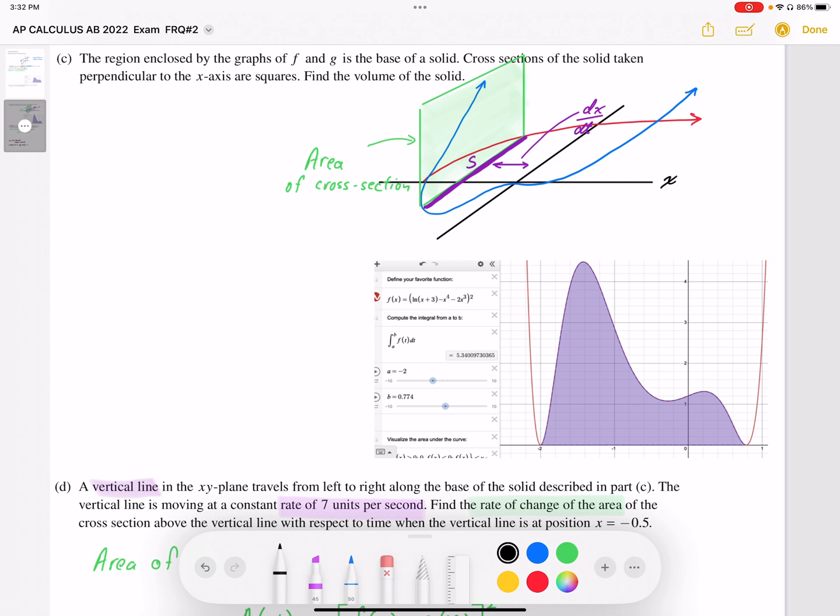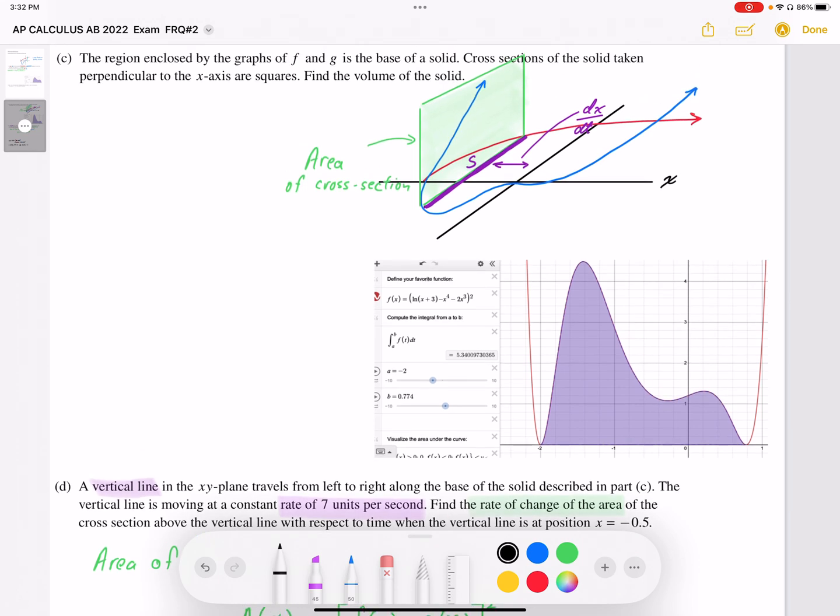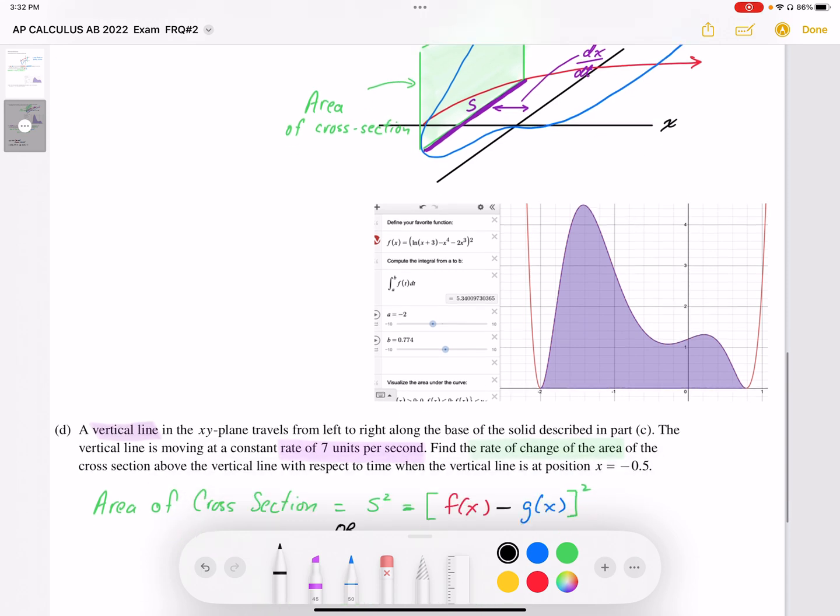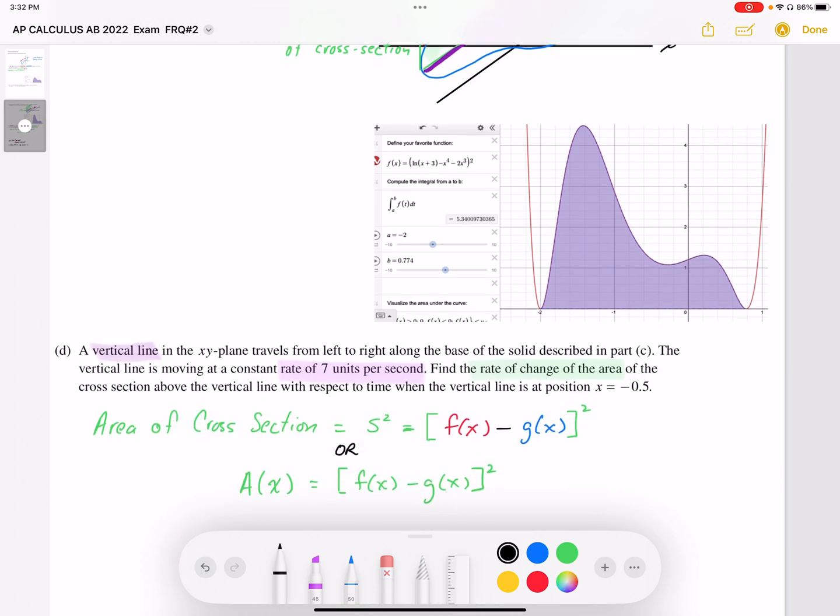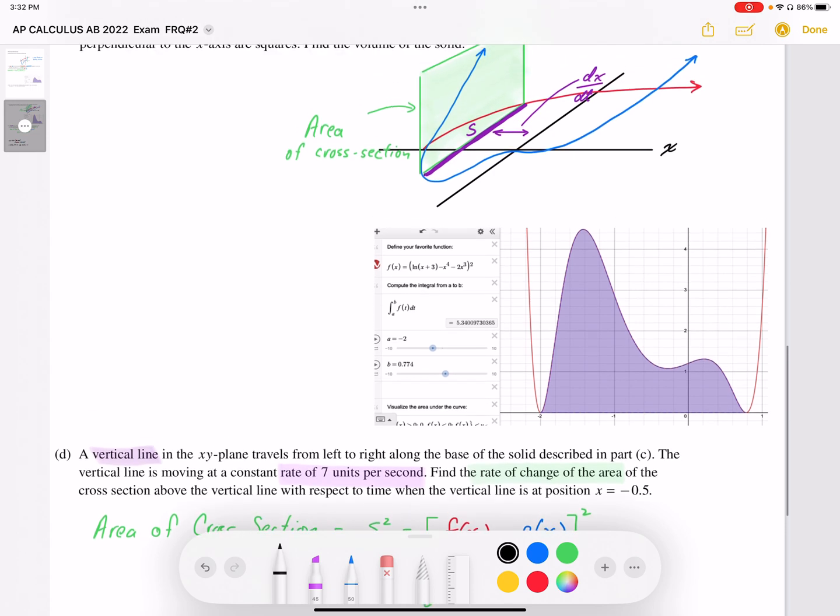That vertical line moves left and right to change where the position of that square is going to be. And by changing the position of the square, we're going to change the area. So the vertical line is moving at a constant rate of 7 units per second, going to the right at 7 units per second.